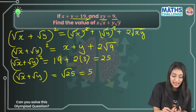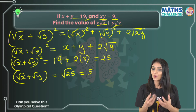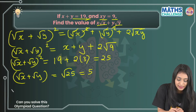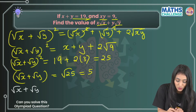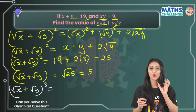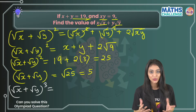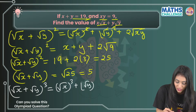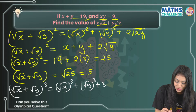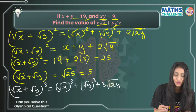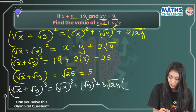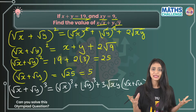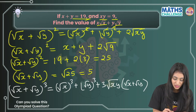So till now I got the value of √x + √y, but the question is asking for x√x + y√y. To get that, we take (√x + √y) whole cube. That's applying the (a + b)³ identity, which gives us (√x)³ plus (√y)³ plus 3 times √x times √y times (√x + √y), i.e., 3√(xy) times (√x + √y).